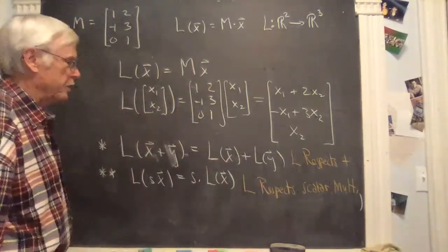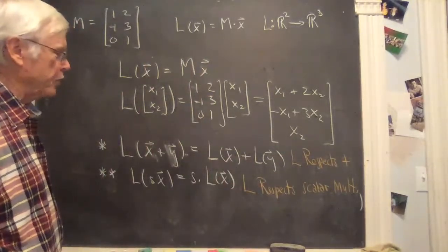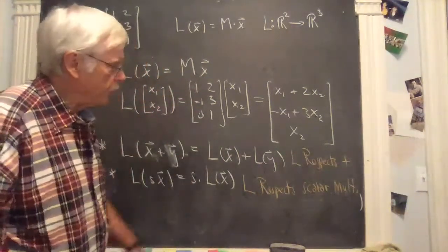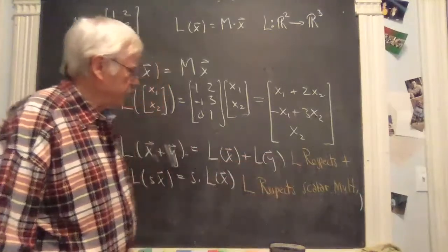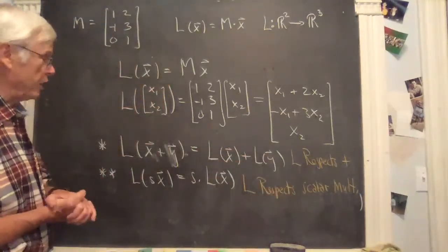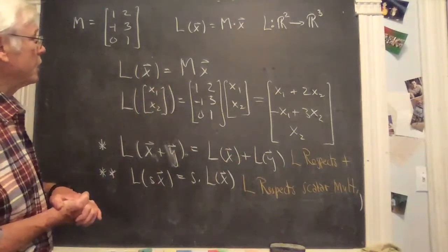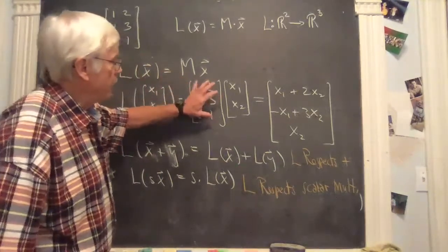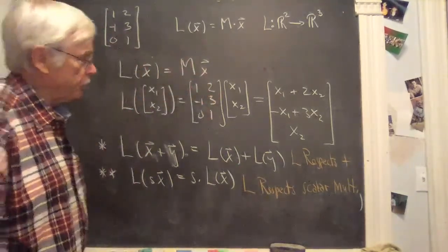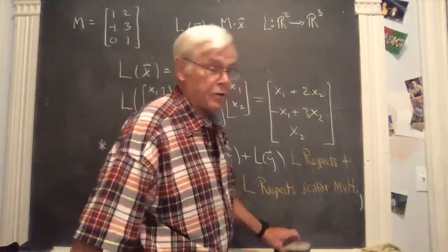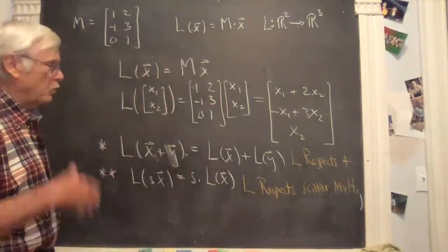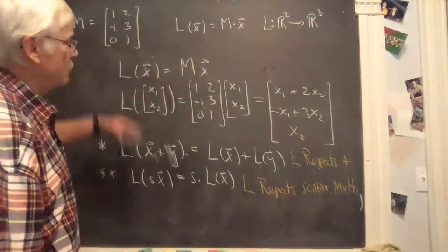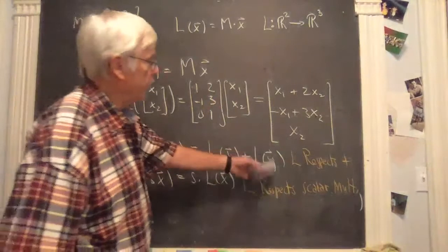So that is what the definition of linear transformation means — one of two things: either L has a matrix representation, or it respects vector addition and scalar multiplication. So this is the background for what we're doing. We're trying to use these matrices in order to analyze the functions. And we will begin to live in the arithmetic of matrix land. What we are doing is reflecting properties of the underlying functions, which for us will be all linear transformations.